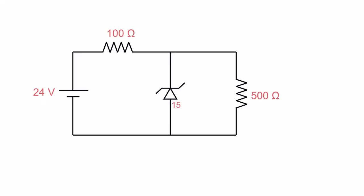Well with 24 volts on it, this guy is going to block 15 volts and put 15 volts across the 500 ohm resistor, and the remainder of it is going to go across the 100 ohm resistor.